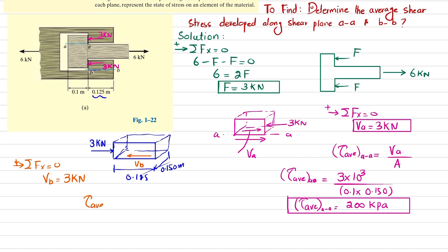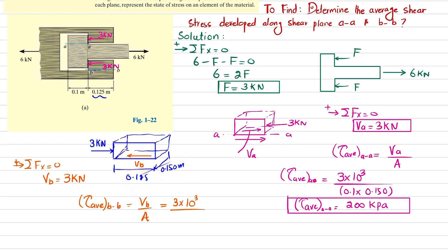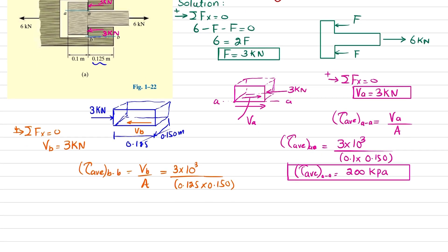The average shear stress at section B-B equals shear force divided by shear area. The shear force is 3 kN (3 × 10³), and the shear area is 0.125 × 0.150 m². Solving this gives the average shear stress at section B-B equal to 160 kilopascals. This is the answer to the second part.